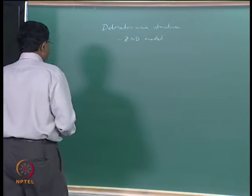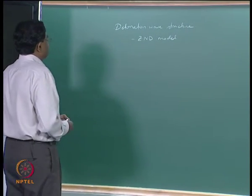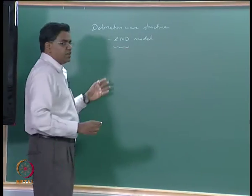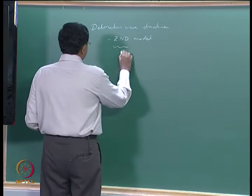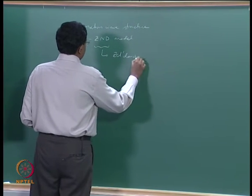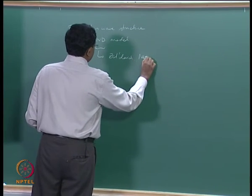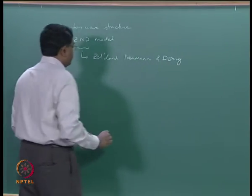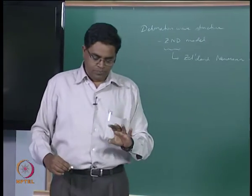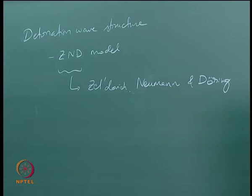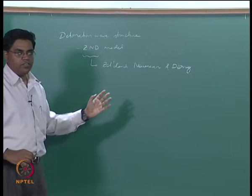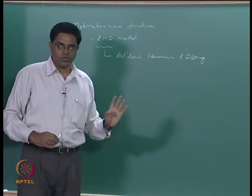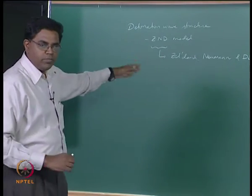Similarly, we can apply a similar approach, and the first advancement in this area is what is called the ZND model, which stands for Zeldovich, von Neumann, and Döring, who independently all three of them developed this idea in the time frame of about 1940 to 1942. Of course, there is a historical perspective here — detonations are somewhat destructive most of the time, and that time frame was also the time of the Second World War, so there was good reason why people were working on this.